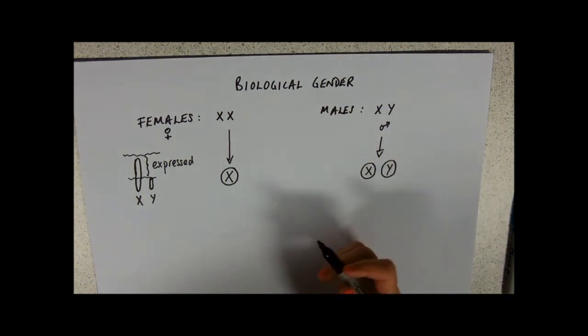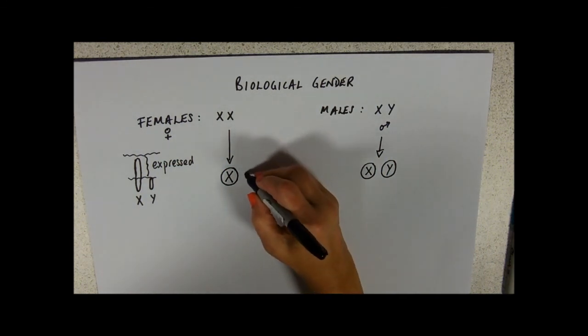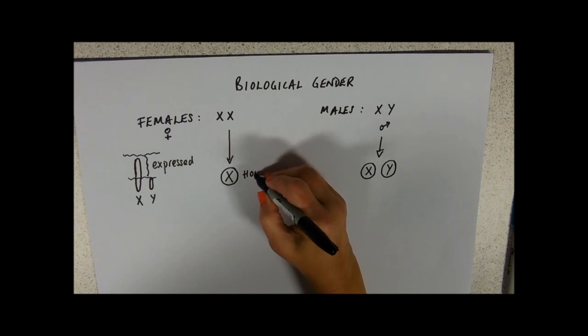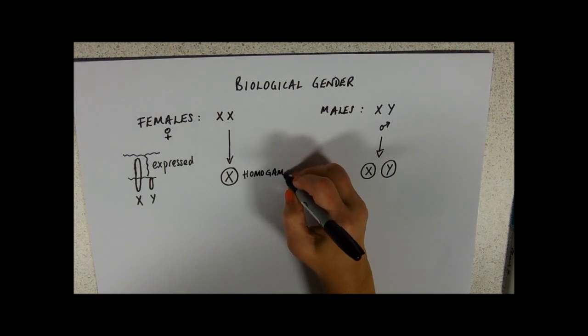So, in terms of sex chromosomes, females are producing all the same sort. They are only producing X chromosomes and we call those then, remember homo means the same, the homogametic sex.